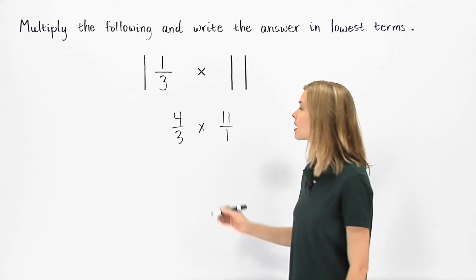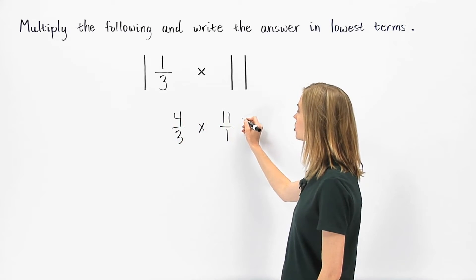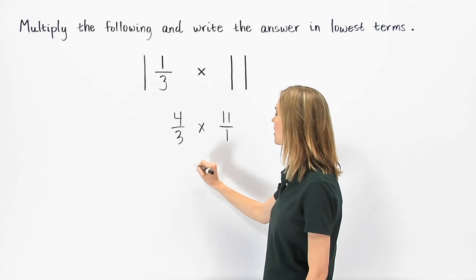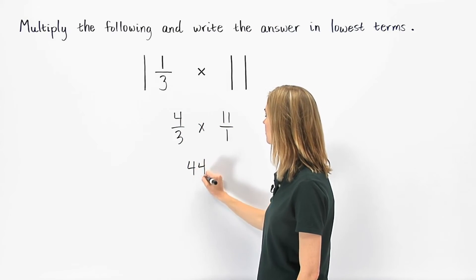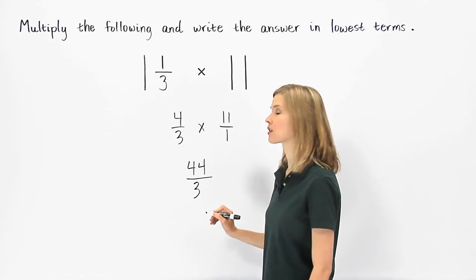Now, remember from the previous section that to multiply two fractions, we multiply across the numerators and across the denominators. 4 times 11 is 44, and 3 times 1 is 3, so we have 44 thirds.